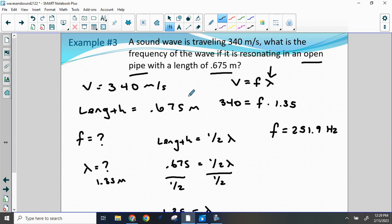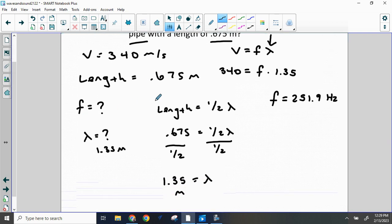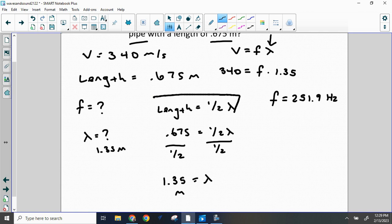And we've learned that when we deal with open pipes, the length is equal to one-half wavelength. Therefore, we can put the 0.675 in to our equation here and convert from length to wavelength. And we know that the wave in this problem was 1.35 meters long because of our conversion.